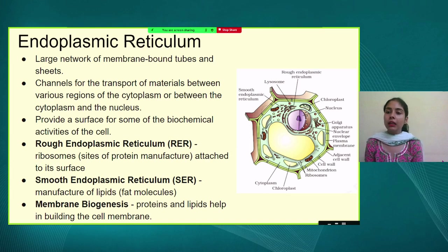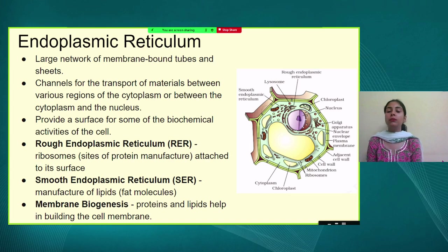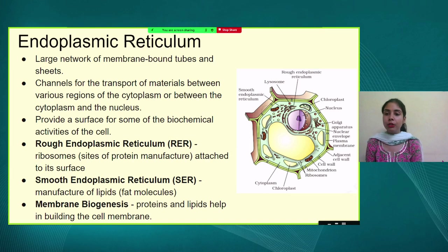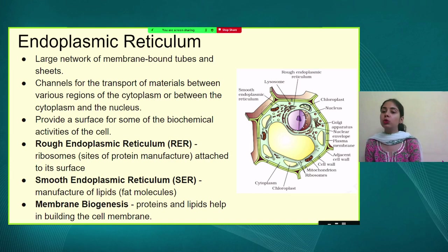Endoplasmic reticulum is divided into two types: rough endoplasmic reticulum and smooth endoplasmic reticulum. The rough ER, when viewed under the microscope, has tiny bumps on it — these bumps are ribosomes, which are the site for protein synthesis. The smooth ER, as the name suggests, appears smooth under the microscope because ribosomes are absent, and it is the site for the production of lipids or fat molecules.